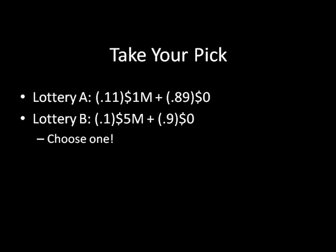Lottery A: I give you $1 million with 11% probability and $0 with 89% probability. Lottery B: I give you $5 million with 10% probability and nothing with 90% probability. Which one of these do you prefer — if I could give you either lottery A or lottery B, which one would you want?